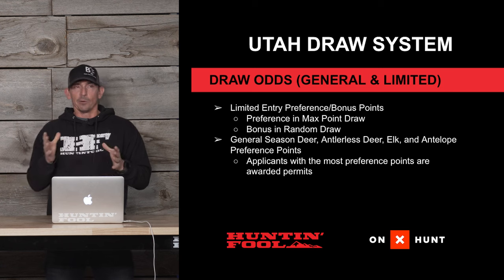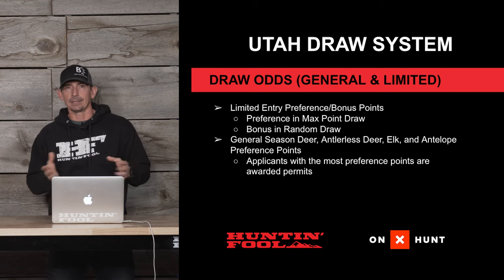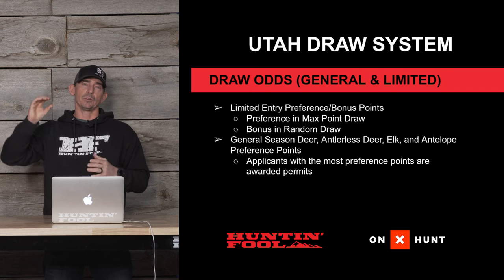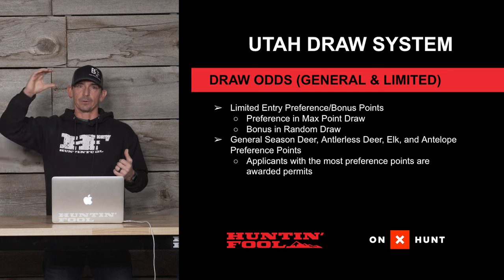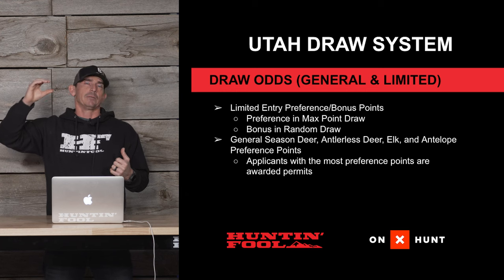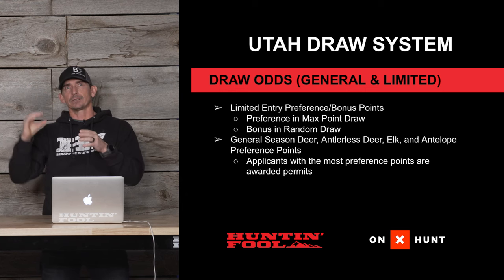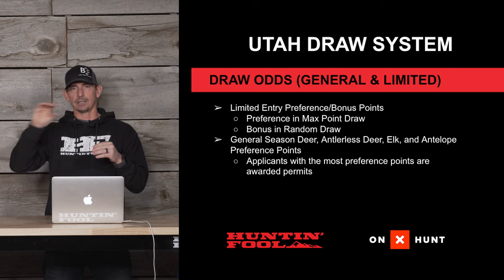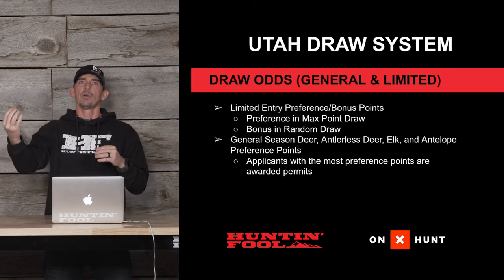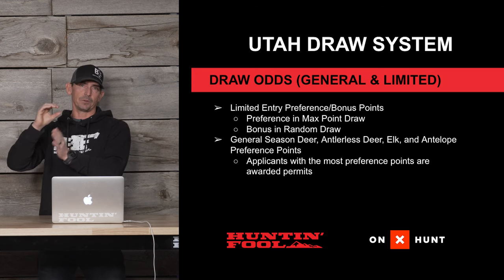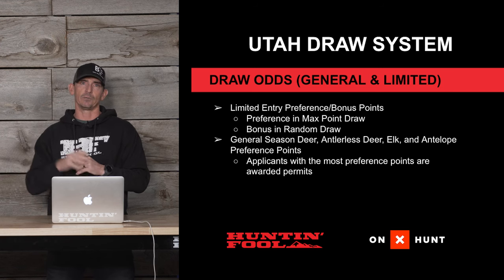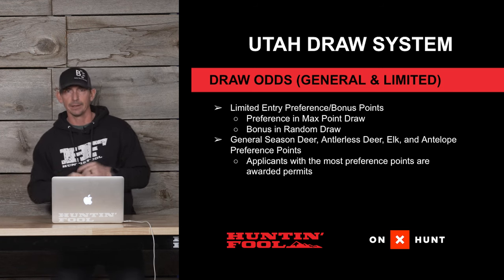One tip: when checking your random draw odds, enter the number of points you would have had the year prior, not your current total. If you have 17 points now, when those odds were calculated you would have had 16 points. Entering last year's point total gives you a more accurate representation of what your chances would have been for that hunt.